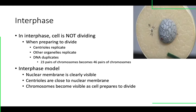Towards the end of interphase, the cell gets ready to divide. It's still not dividing, but it's preparing to divide. When that happens, the organelles called centrioles replicate. Other organelles replicate too — the mitochondria replicate and the endoplasmic reticulum replicates, producing more and more of those. Then the DNA duplicates, so instead of having 23 pairs of chromosomes, we now have 46 pairs of chromosomes.